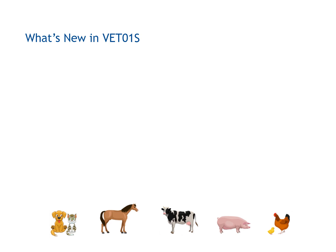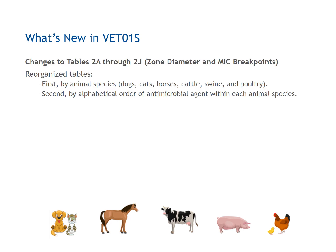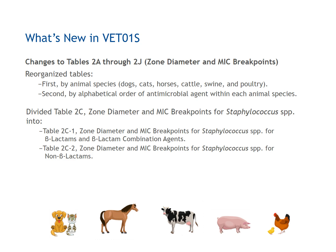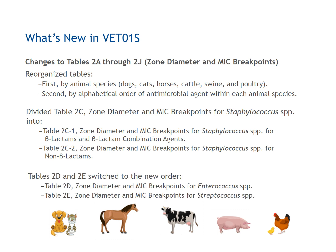Additional new items in this 5th edition include changes to Tables 2A through 2J — Zone Diameter and MIC breakpoints — including reorganized tables based on user feedback, first by animal species, then by alphabetical order of antimicrobial agents within each animal species. Table 2C for Staphylococcus species is now divided into separate tables: Table 2C1 for beta-lactams and beta-lactam combination agents, and Table 2C2 for non-beta-lactams. The former Tables 2D and 2E are now in reverse order, with Table 2D containing breakpoints for Enterococcus species and Table 2E containing breakpoints for Streptococcus species.